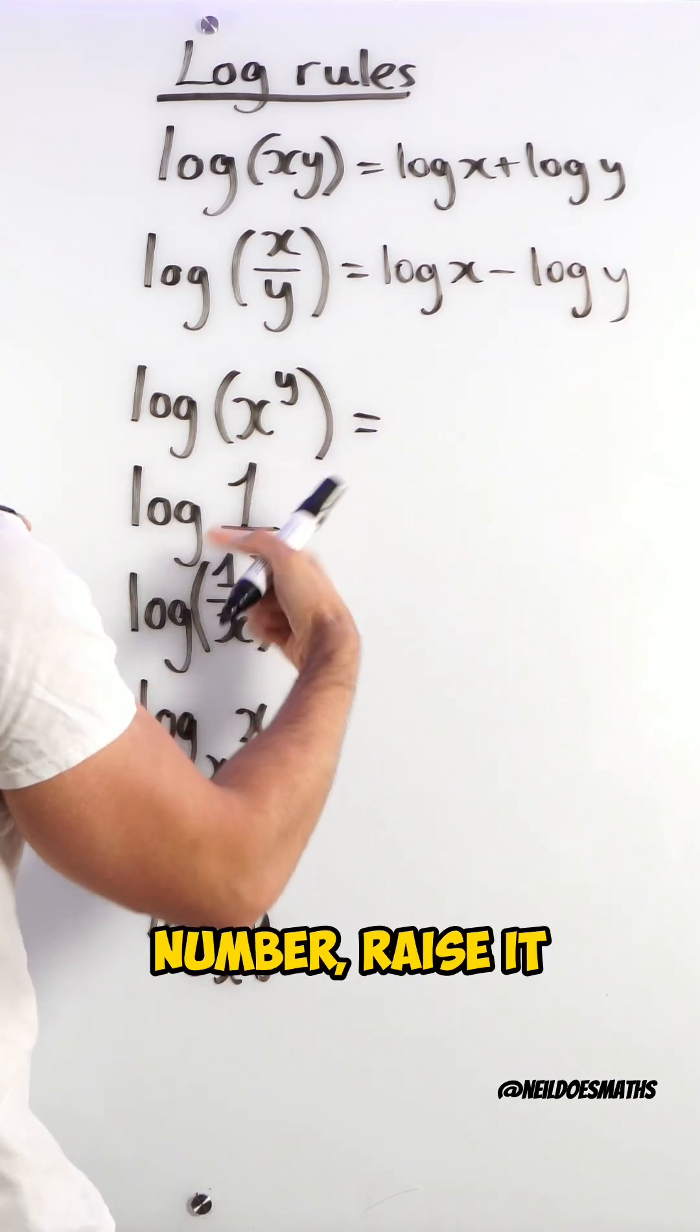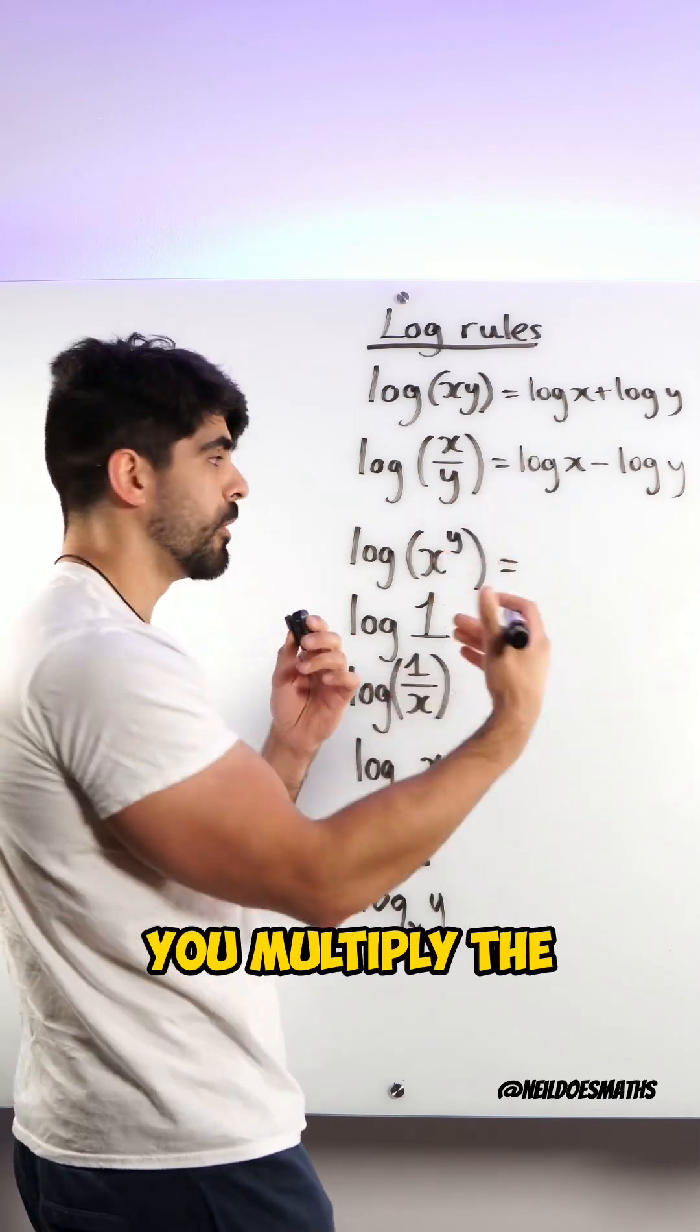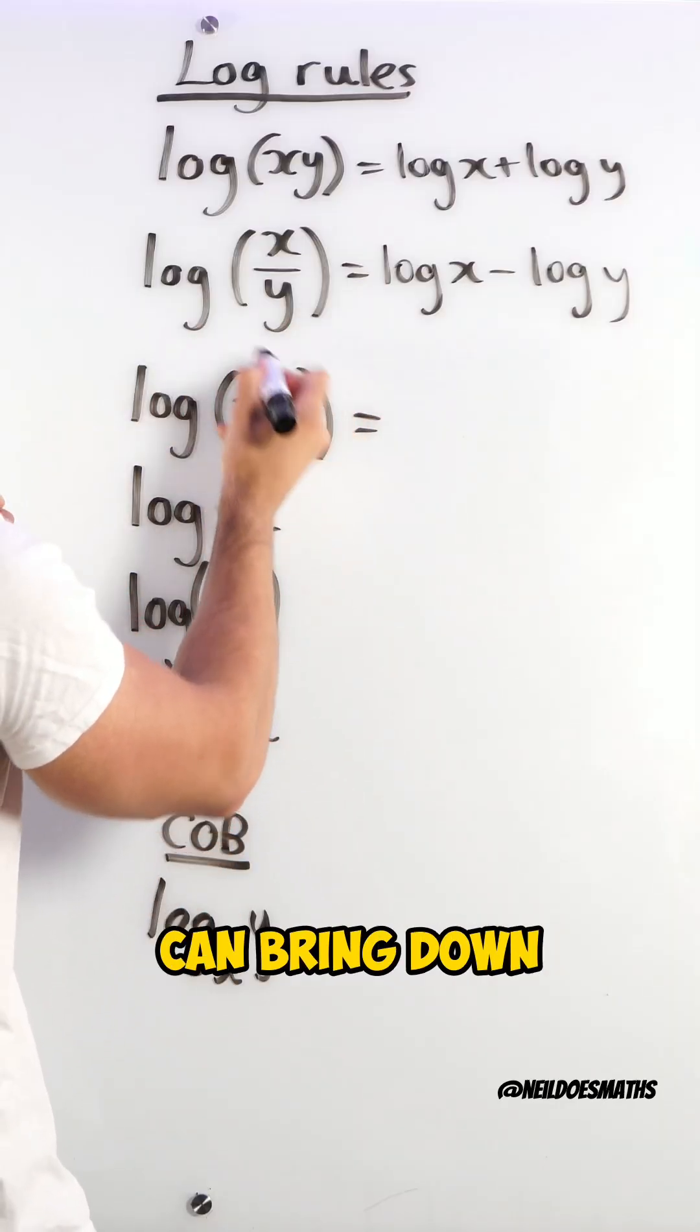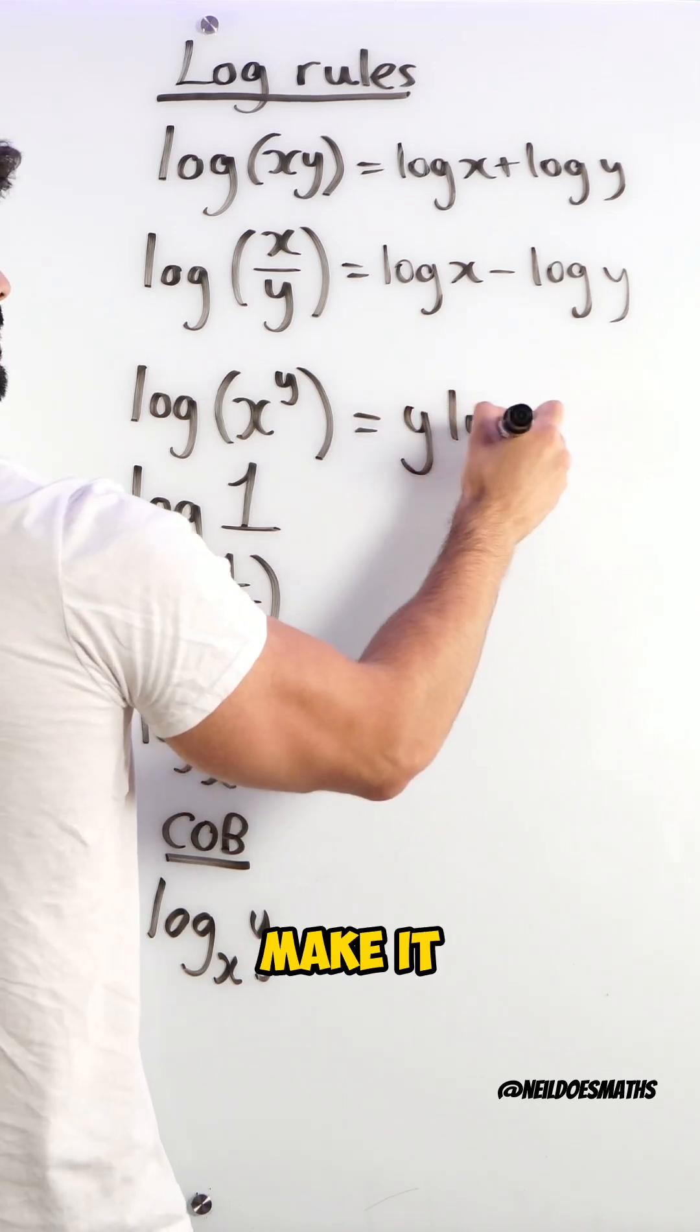Here, when you take a number, raise it to another power, you multiply the powers. So here we can bring down the y and make it multiplication.